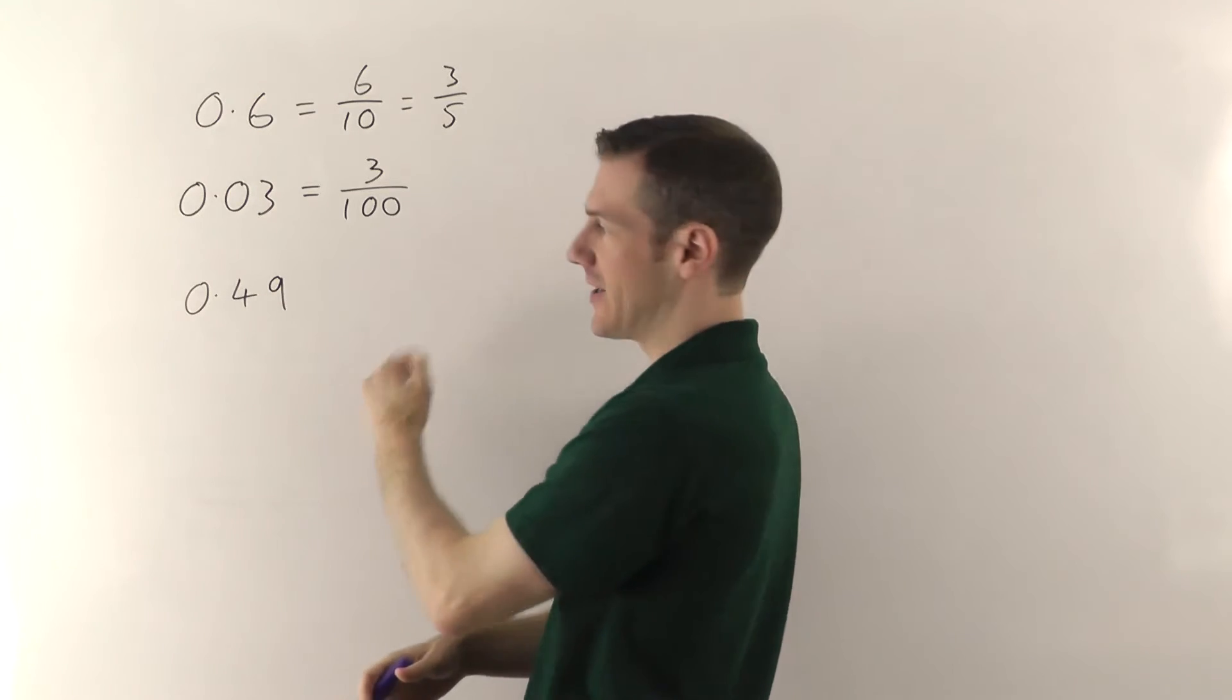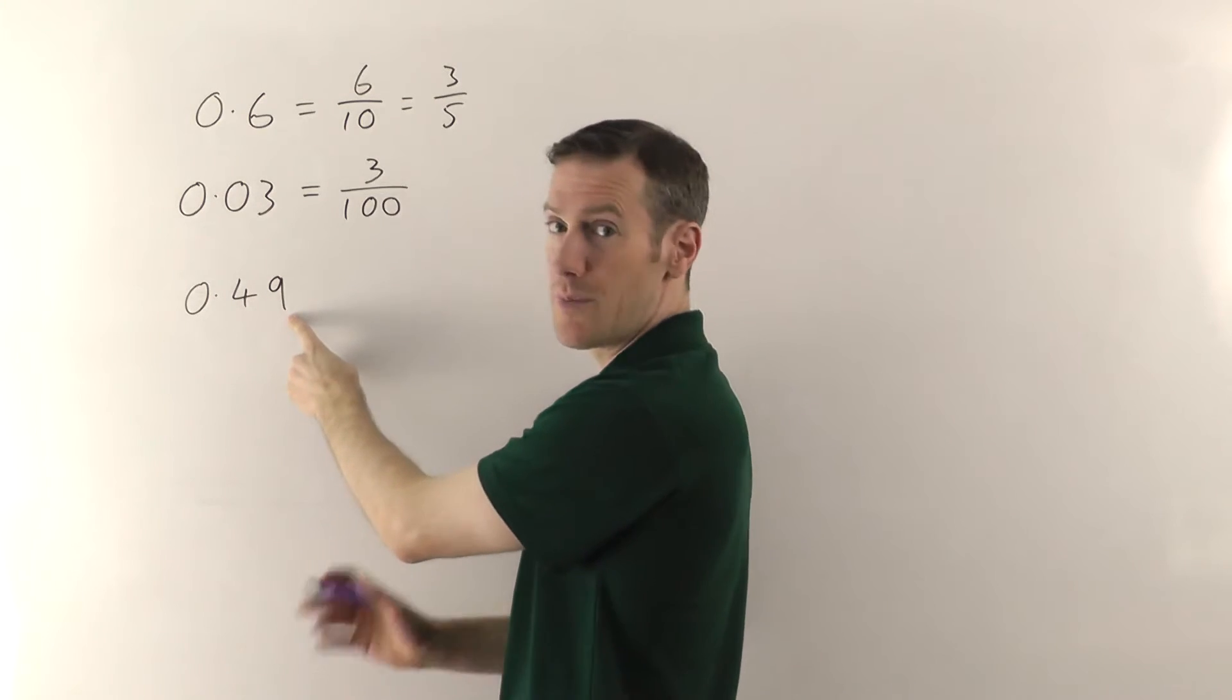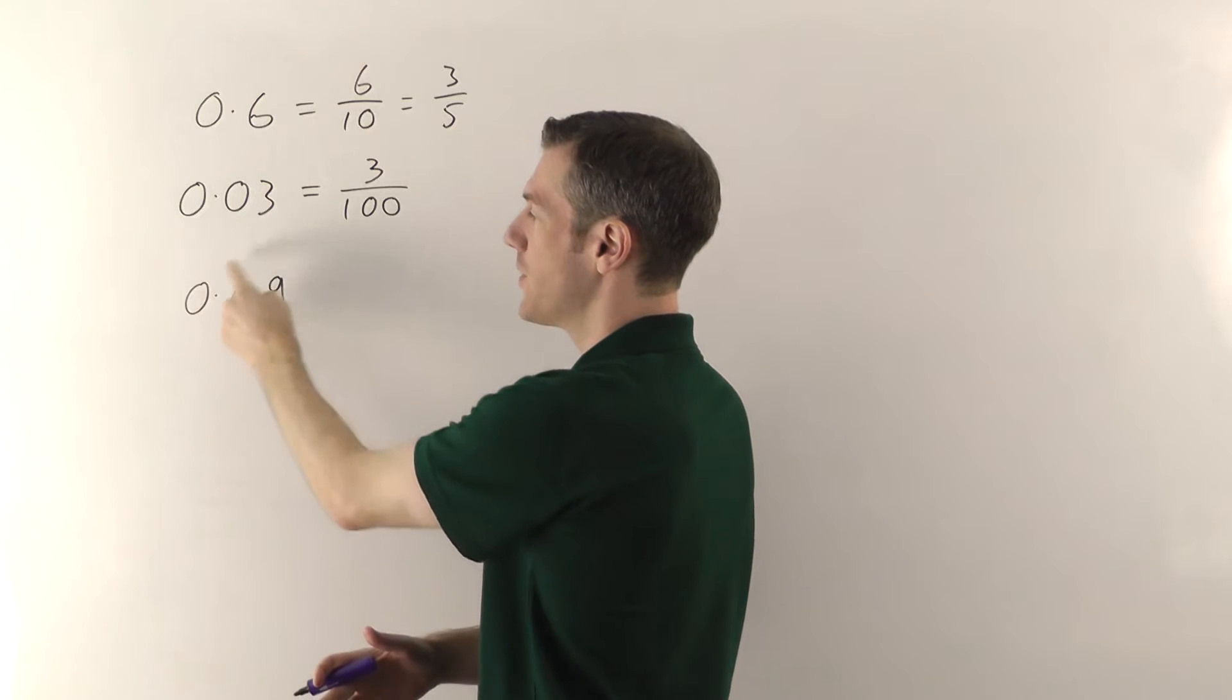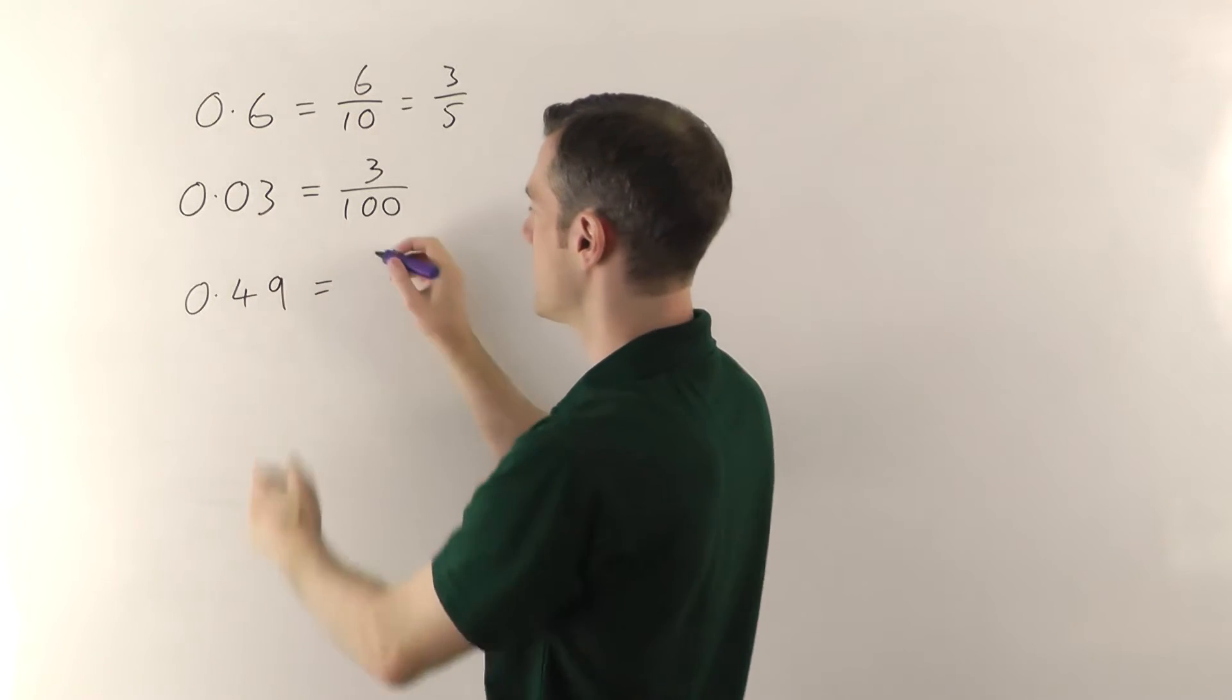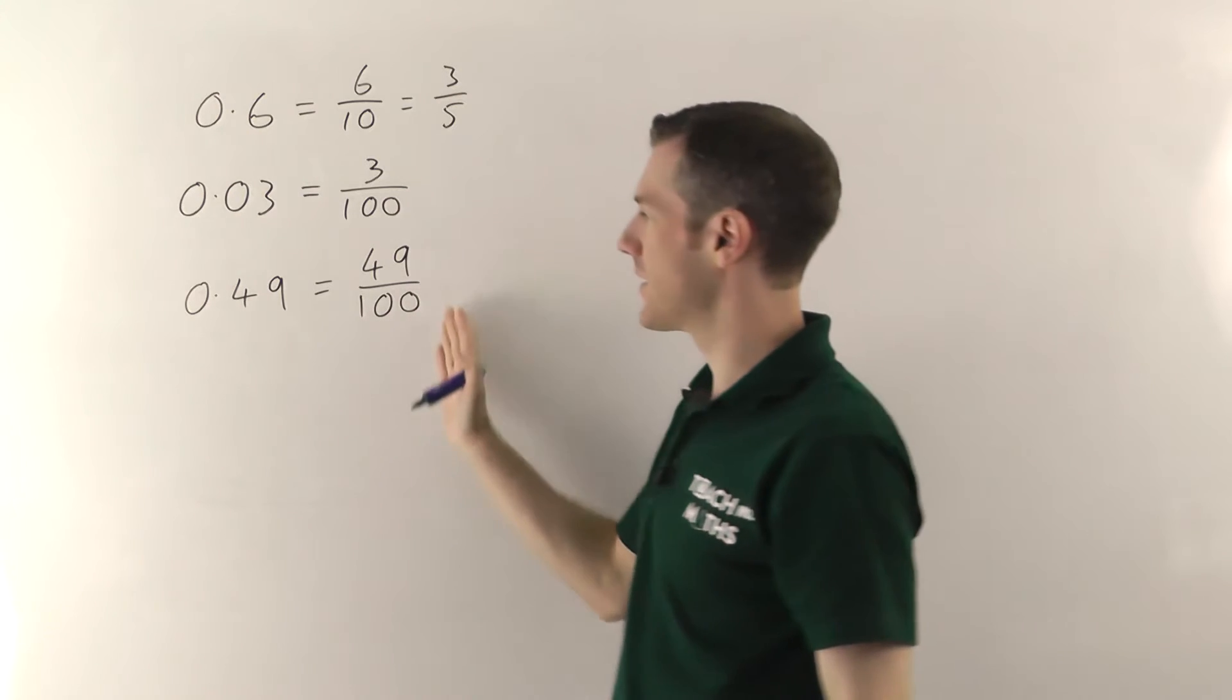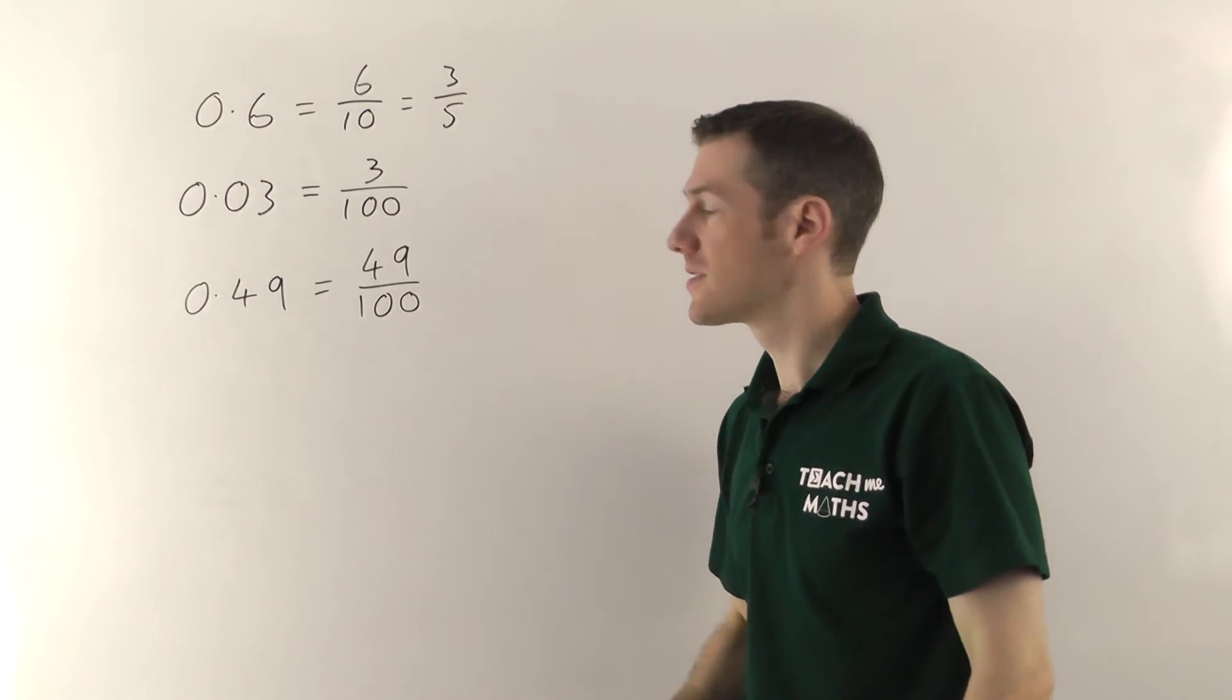So the furthest column to the right, that is. So there's no units here. You've got 4 tenths and 9 hundredths. And what matters here is the hundredths. That's the furthest one you've got to the right. So you're going to put this over hundredths. So you can just read this as 49 hundredths. And you write it just as a fraction like that. Check if it cancels down. This one doesn't. So that would be the answer.